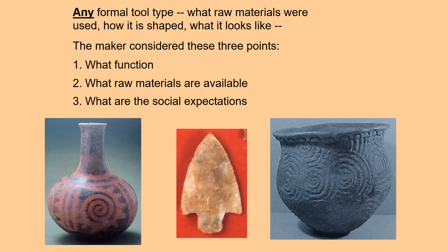Any formal tool type — the materials that were chosen, how it's shaped, what it looks like — the maker considered these three points: what is the function of the tool, what raw materials are available, and what are the social expectations for that tool?